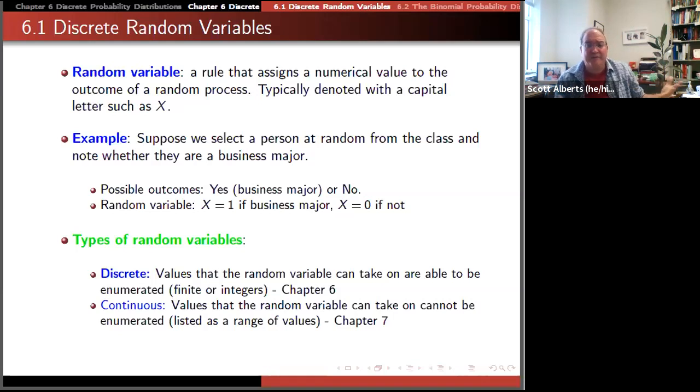A continuous value is something like length or weight where there's going to be decimals. When we think mathematically, we can get as precise as we want depending on how good of a measuring device we have. Discrete variables are quite different than continuous. We're going to get to continuous variables in chapter 7, but chapter 6 talks only about discrete variables.